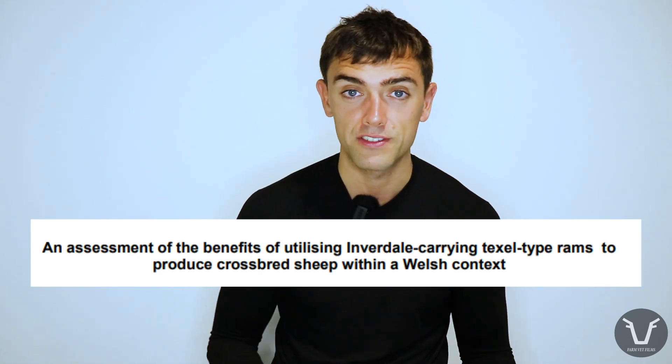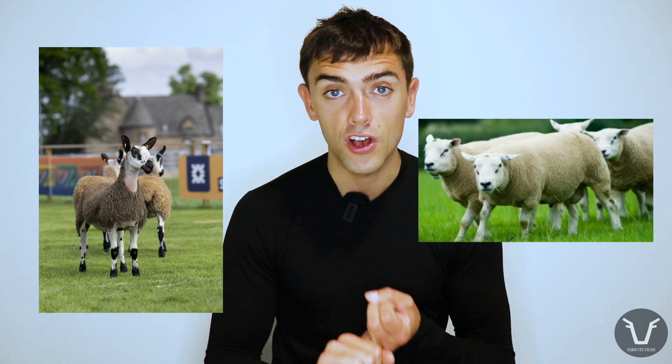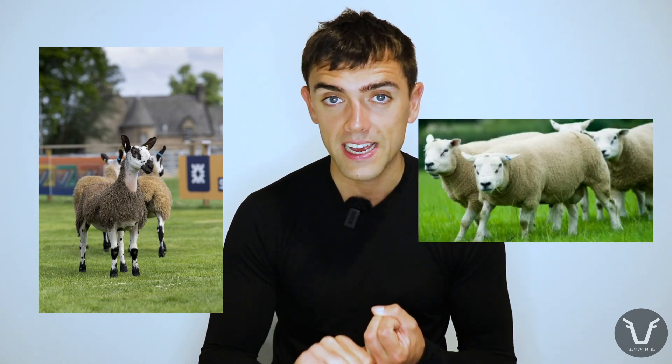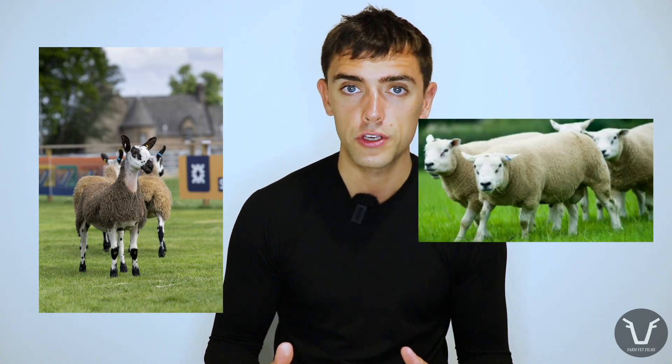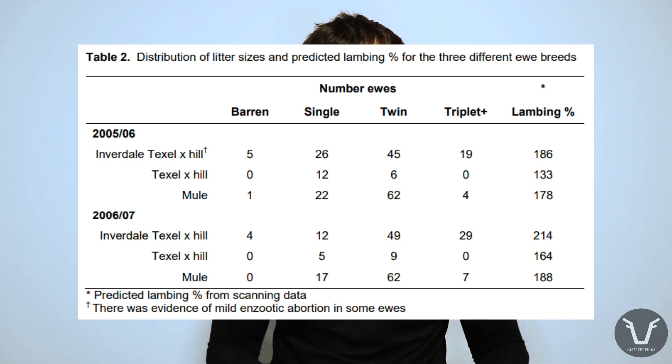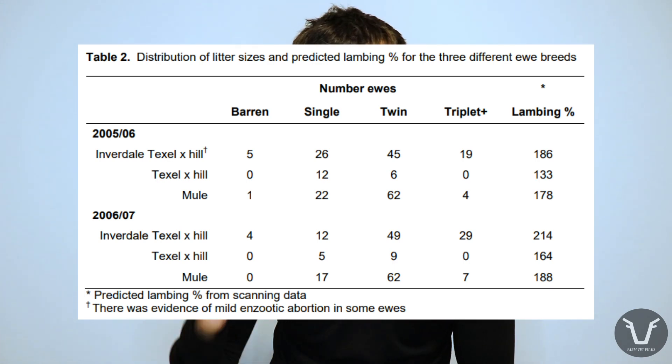Perhaps we do this by using an Inverdale-carrying ram over some hill ewes, which is exactly what Inivis and HCC did back in 2005 and 2006. They ran an experiment crossing either traditional crossing sires like a Bluefaced Leicester versus an Inverdale-carrying Texel over hill ewes. They then followed those progeny and grand-progeny to see how they performed. As you might expect, the Inverdale cross ewe-lambs were much more prolific. Here are some of those results — for the full report I've put a link in the video description.